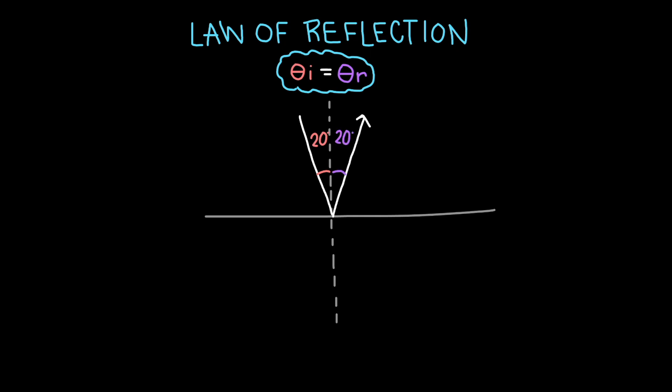Easy enough, right? So let's complicate it a bit. What if instead of just having one mirror we have three? I position them perpendicularly to one another like so. If I point a laser at the first mirror so that it forms an angle of 31 degrees with the first mirror, at what angle will it reflect off of the third mirror?